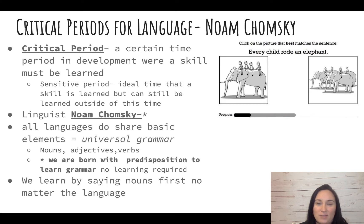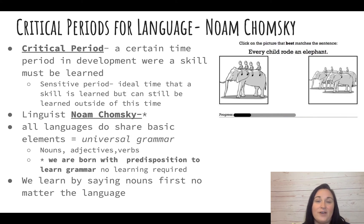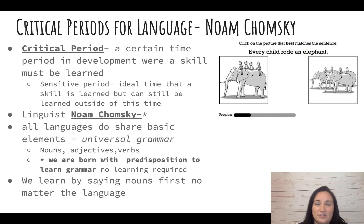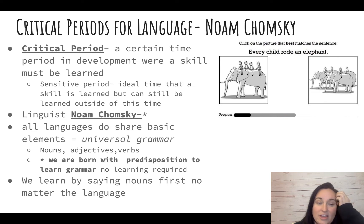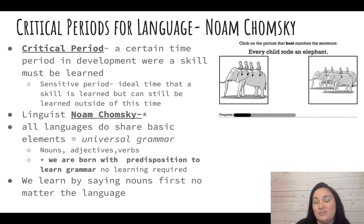The most famous figure when talking about language is Noam Chomsky, a famous linguist who was really the first to discuss the critical period. He also found that language is inborn — we are predisposed to learn grammar. He argued that there is something called universal grammar because all languages share basic elements: they all have nouns, adjectives, and verbs. We all learn by saying nouns first, no matter what language we are learning. So we're predisposed to learn language, but the critical period means that at a certain point, if you don't learn it, it's not going to happen.